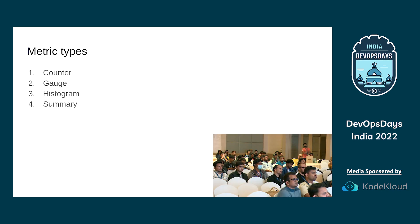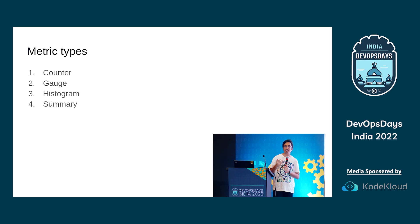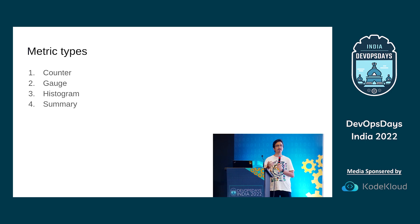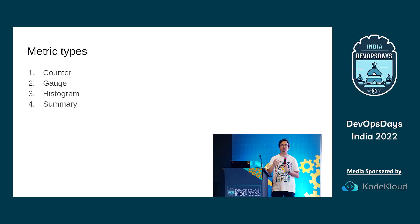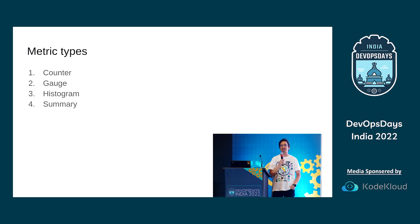Prometheus supports four types of metrics. I will only talk about a couple of them today — partly because I don't have the time, and partly because I only know two. As a matter of principle, I don't like talking about things I haven't done or don't know about. That's what elections are for.